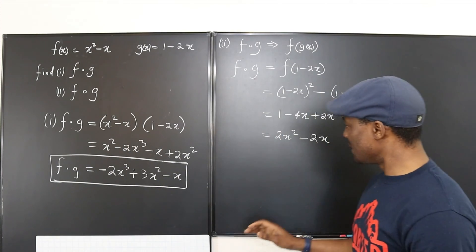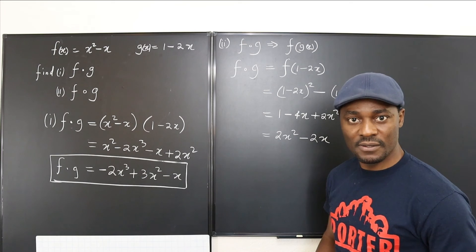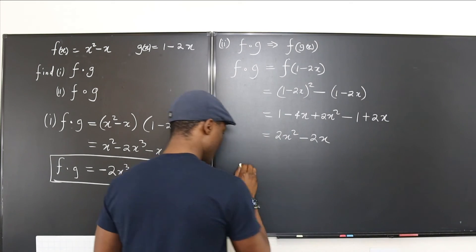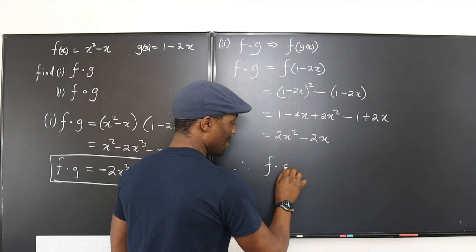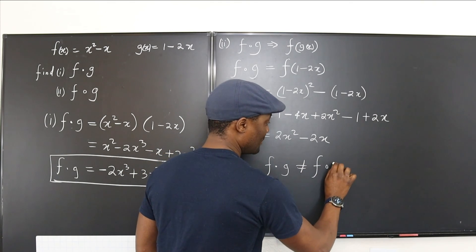So, as you can see, this does not look like this. Therefore, you can conclude that f times g is not equal to f of g.